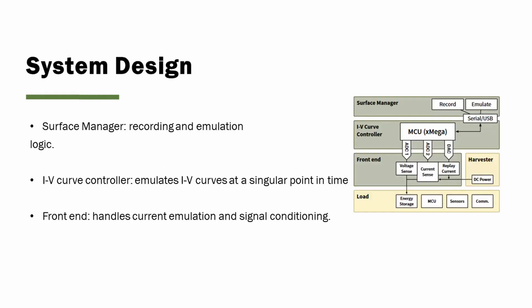ECHO's system architecture is split into three parts. A surface manager, which stores IV surfaces — a collection of tracked IV curves — and manages all of the high-level recording and emulation logic. An IV curve controller, which emulates IV curves at a singular important time in a surface. And finally, an analog front end, which manages controllable current emulation and provides signal conditioning to take accurate current and voltage measurements.